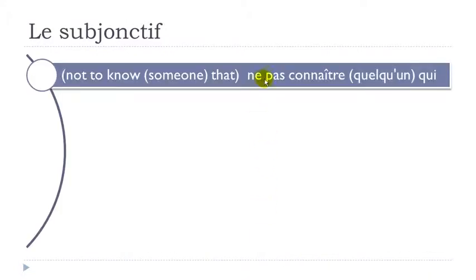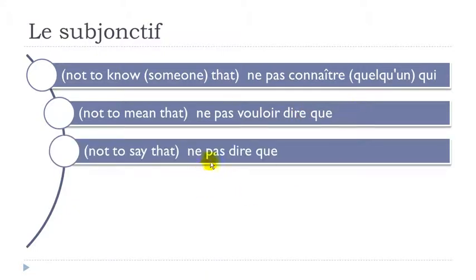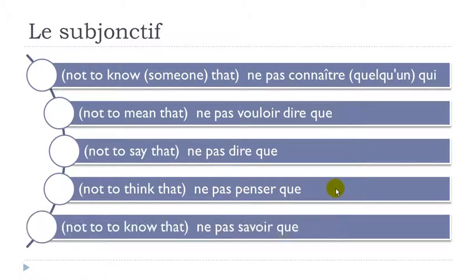Ne pas connaître quelqu'un qui. Ne pas vouloir dire que. Ne pas dire que. Ne pas penser que. Ne pas savoir que. To review: ne pas connaître quelqu'un qui, ne pas vouloir dire que, ne pas dire que, ne pas penser que, ne pas savoir que. All these expressions should be followed by le subjonctif.